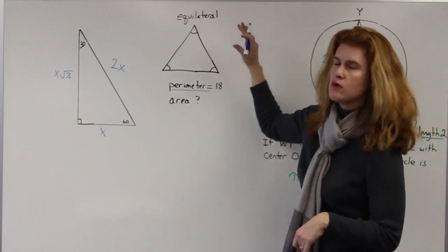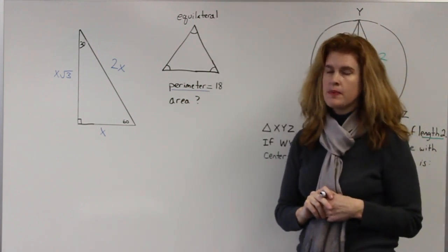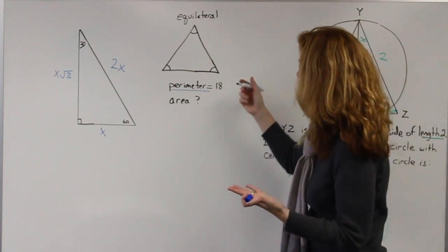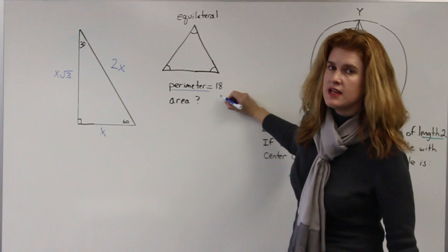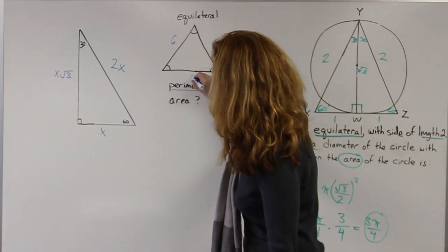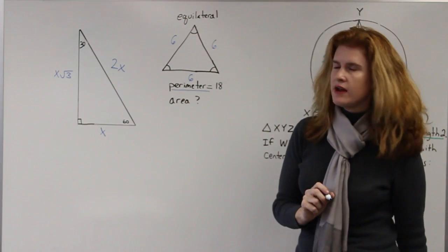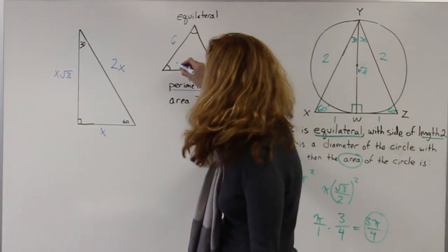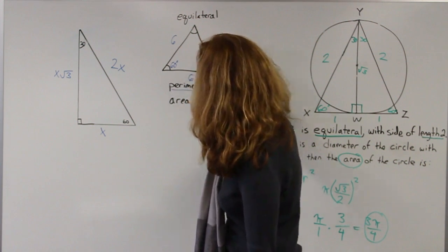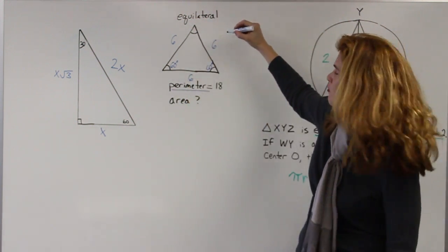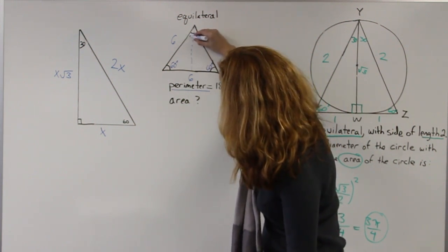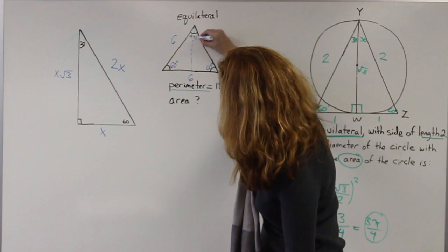So when you add up all the sides of this equilateral triangle, it equals 18. Because it's equilateral, that means all sides are equal. So that means each side is going to be 18 divided by 3, which is 6. And because it's equilateral, that means that each angle is 60 degrees. But remember, I can split this into two 30-60-90 triangles.